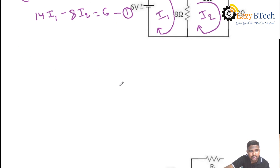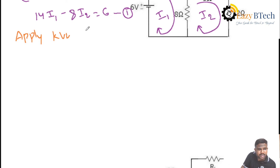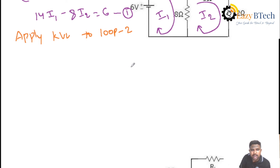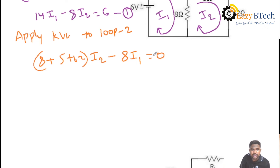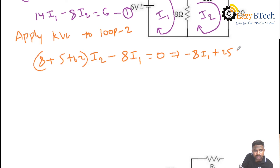Apply KVL to loop 2. I2 current is passing through 8, 5, and 12 ohms: 8 plus 5 plus 12 into I2. The drop across all resistances — 8 ohms is the mutual element. Both currents are passing in reverse direction, so the drop with respect to I1 is minus 8I1. In this loop, there is no voltage source, so equal to 0. Rearranging: minus 8I1 plus 25I2 equal to 0. This is equation 2.